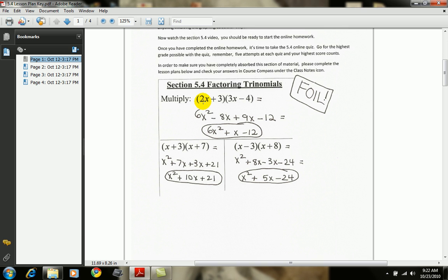The first two terms together, 2x times 3x, would give me 6x squared. The outer terms, 2x times negative 4, would be negative 8x. The inner, 3 times 3x, is 9x.